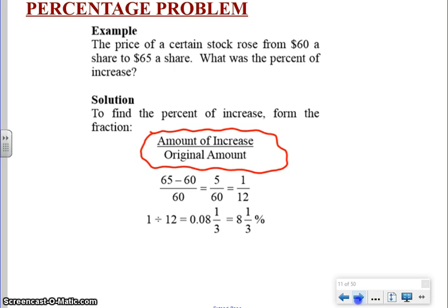This first example says the price of a certain stock rose from $60 a share to $65 a share. What was the percent increase? The way that we're going to handle this, the reason why we're going through this problem is to show you that we have a quick little formula: the amount of the increase divided by the original amount. As you can see, 65 minus 60 shows that five is our amount of increase divided by the $60.